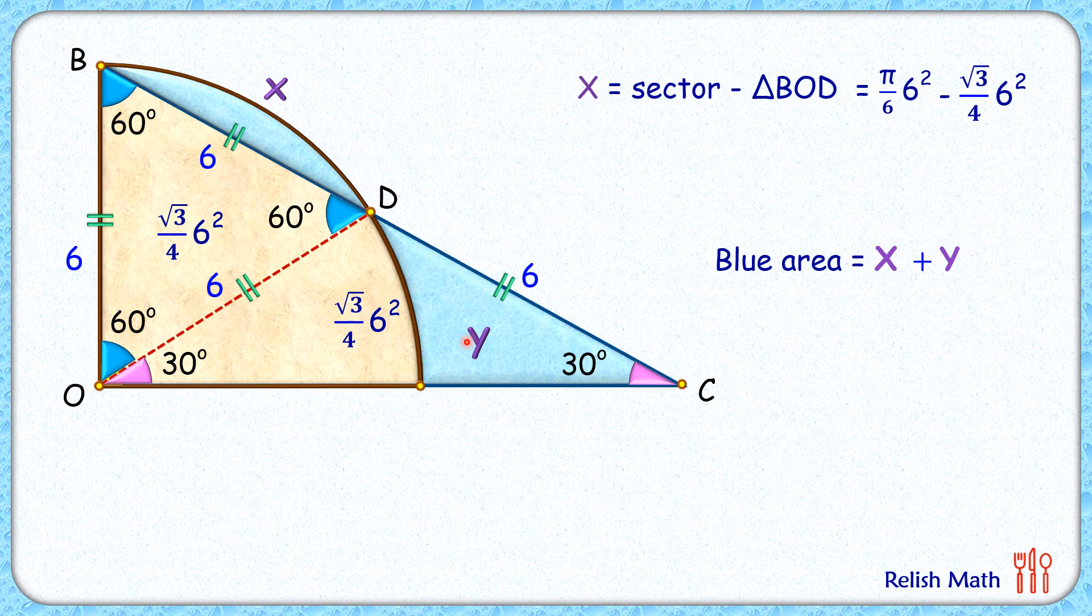How about region Y? Region Y is the area of triangle ODC minus the area of this sector. The area of triangle ODC is (√3/4) × 6², and the area of the sector will be 30/360, or (1/12) × πr². So the area of the triangle is (√3/4) × 6² minus the area of the sector, which is (π/12) × 6².